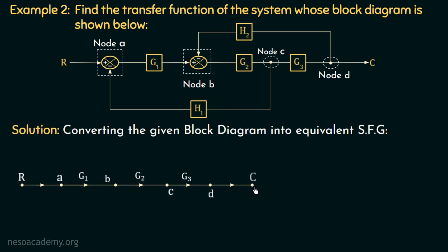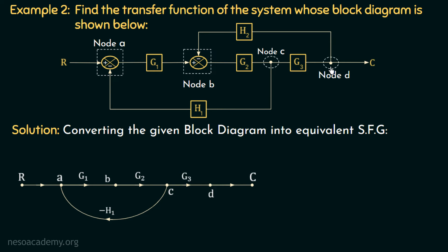This signal will move to the output node. Now if you observe the block diagram, there is a takeoff point between node C and node A having gain H1 with a negative sign, so there will be a branch of gain minus H1 connected between node C and node A. Similarly, there is a takeoff point of gain H2 connected between node D and node B with a negative sign, so in the signal flow graph there will be a branch of gain minus H2 connected between node D and node B. In this way, we have converted this block diagram into its equivalent SFG.